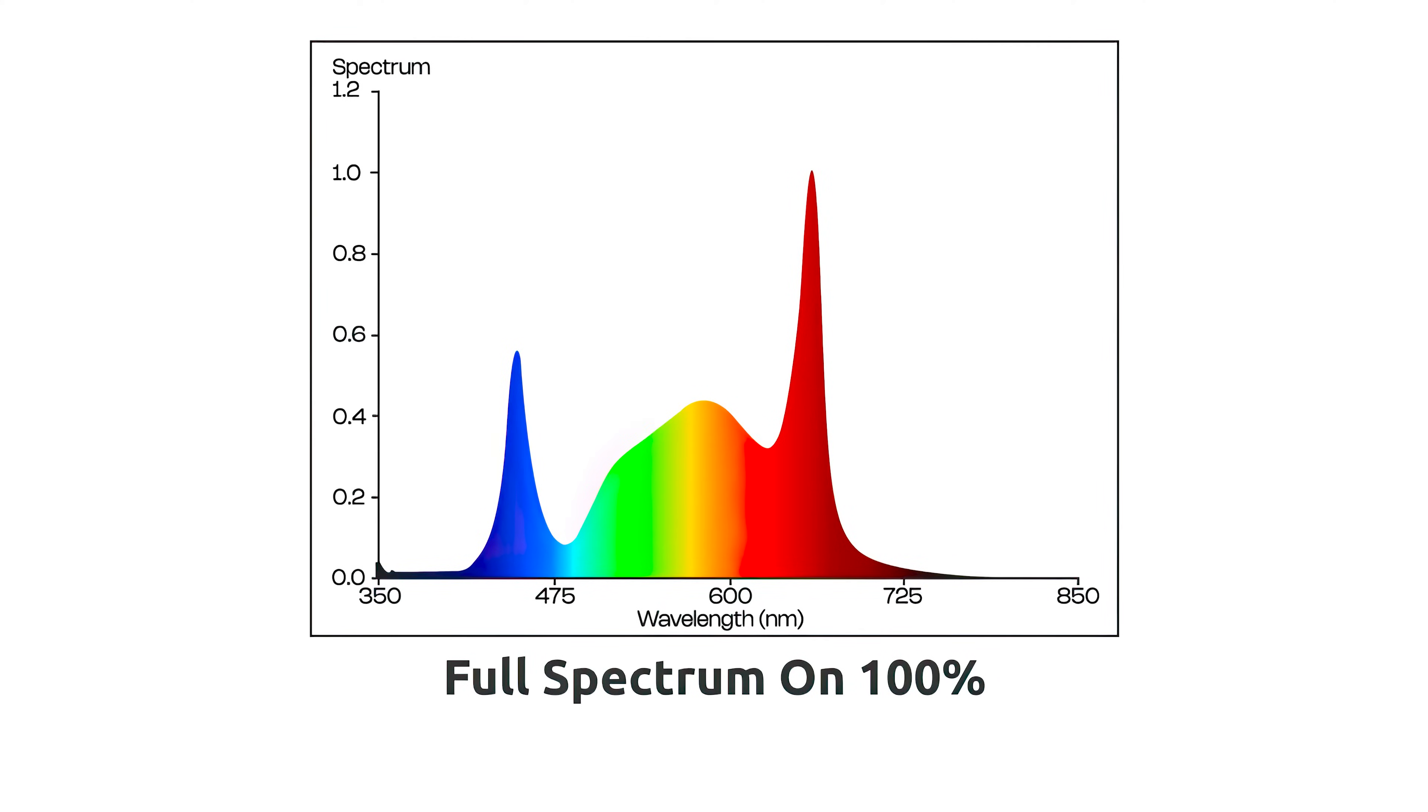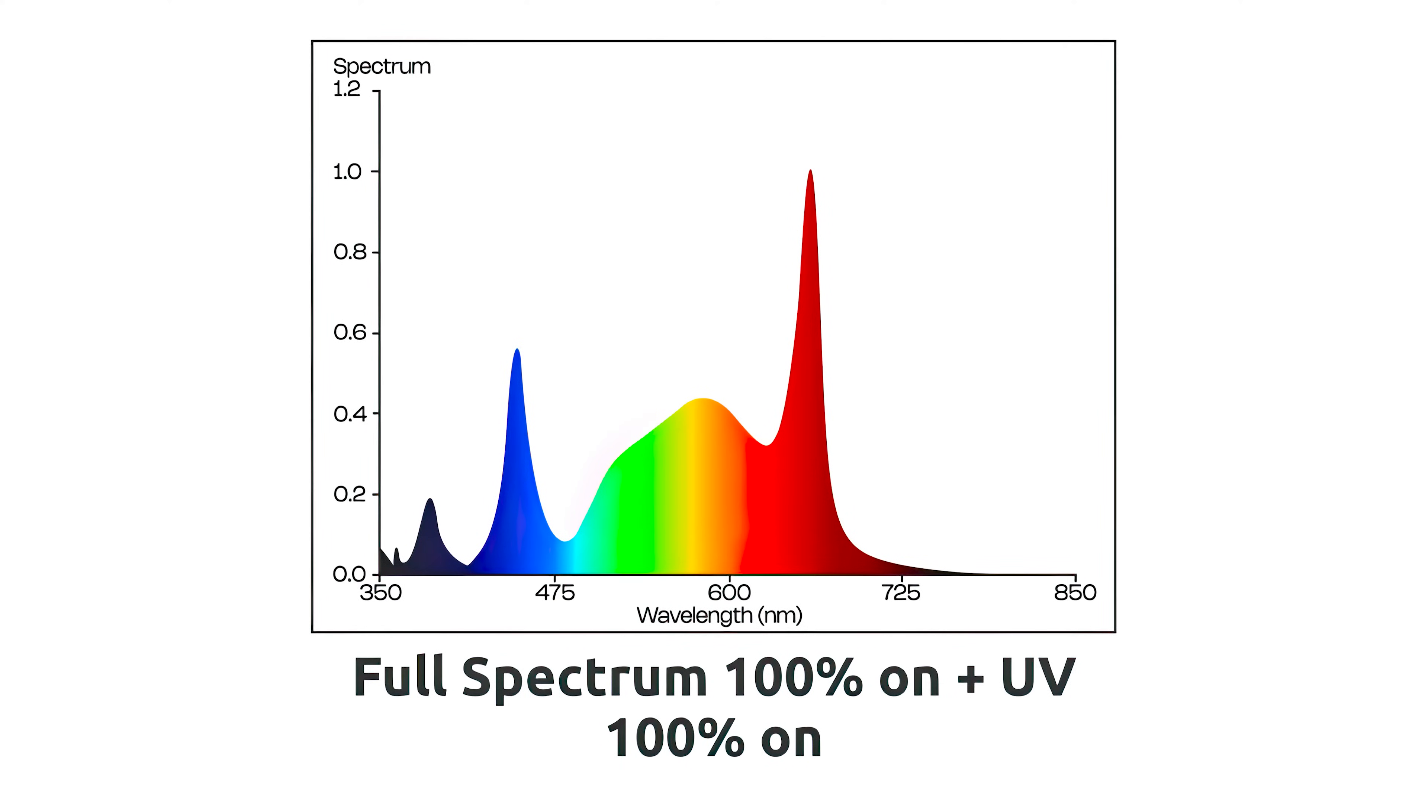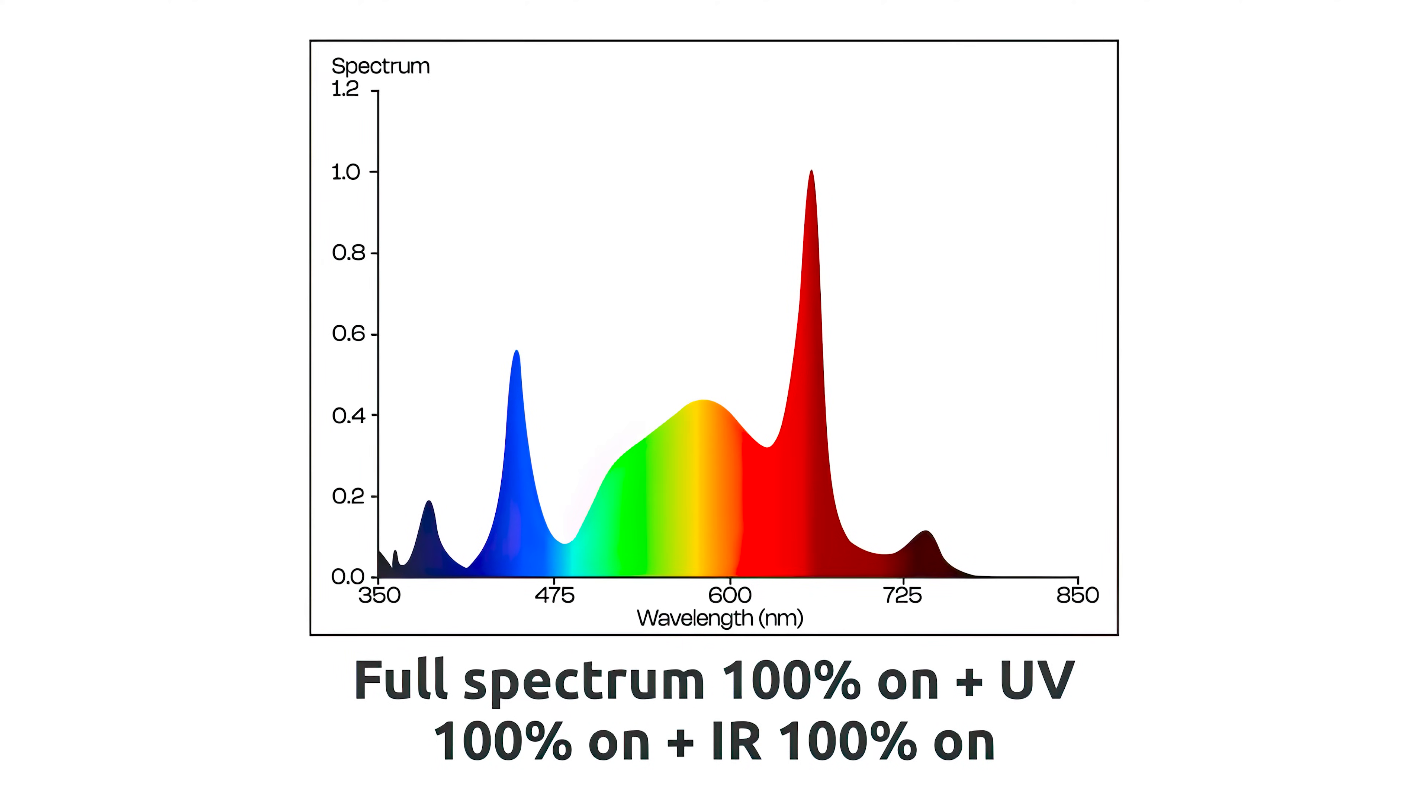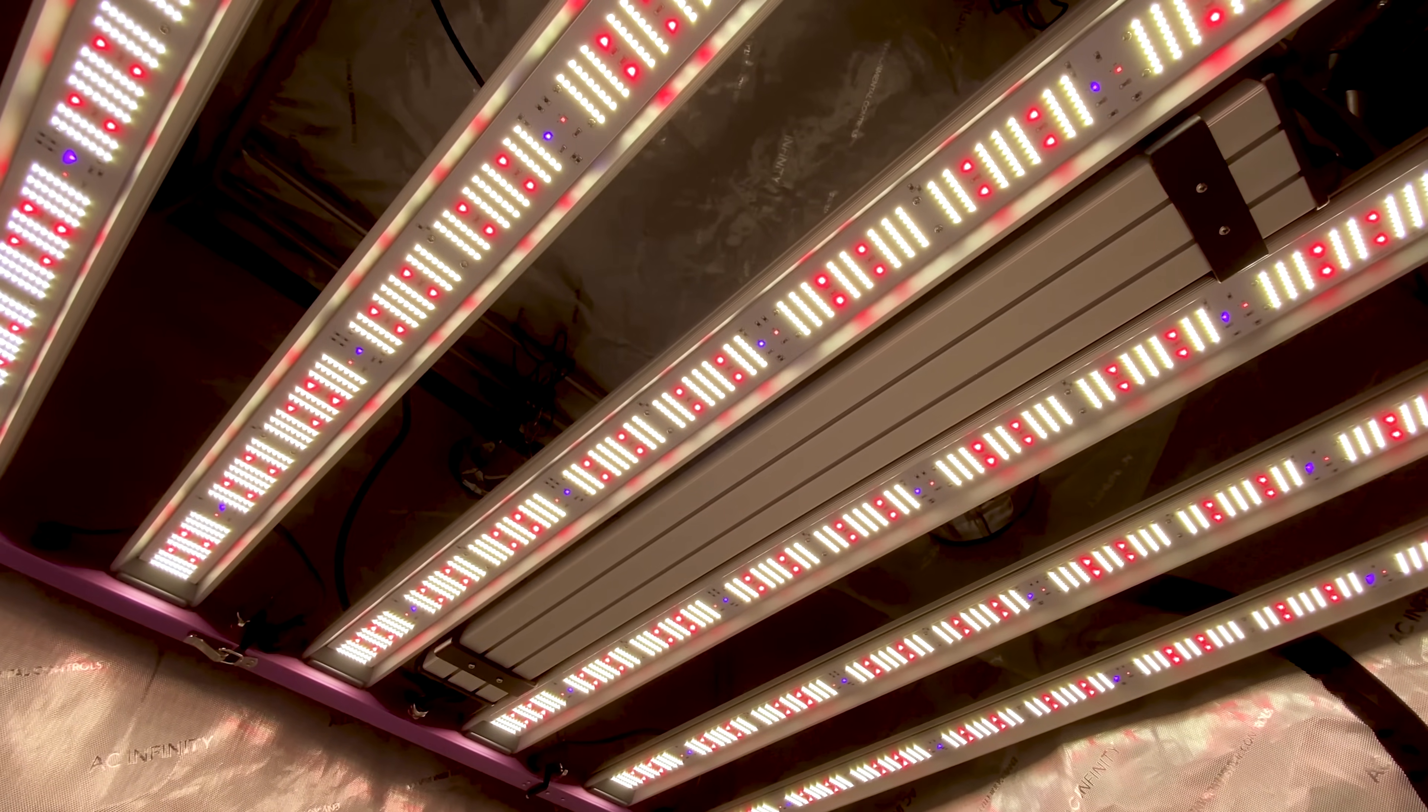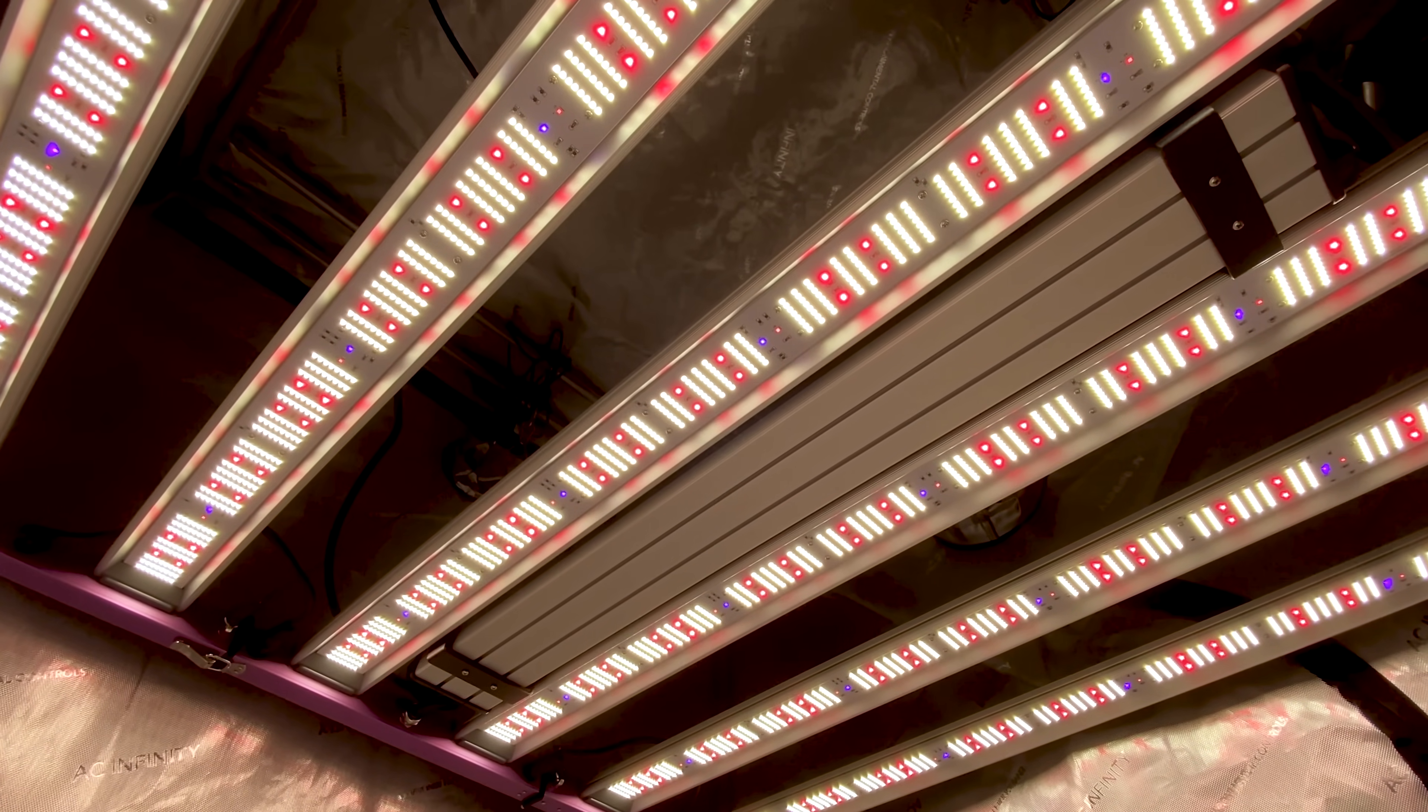The SL830 is engineered with full spectrum bright white light enhanced with 660 nanometer deep red diodes and the unique addition of 385 nanometer UVA and 730 nanometer infrared wavelengths. These features make it incredibly versatile for all stages of plant development, especially high intensity flowering.